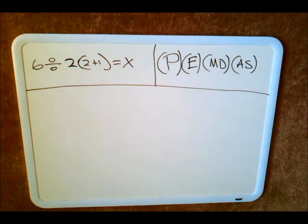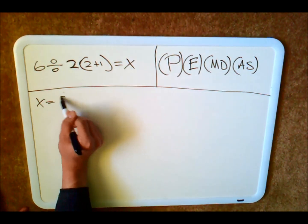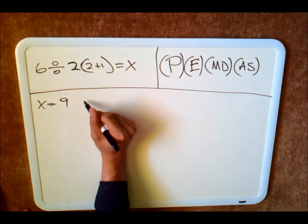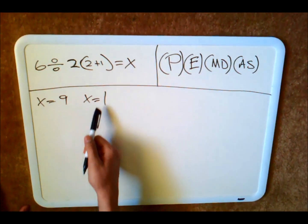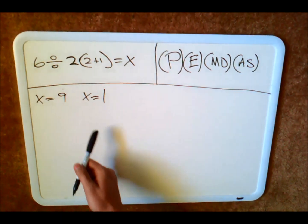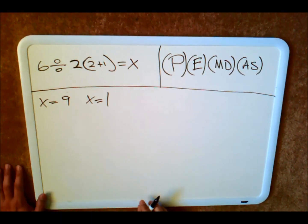Okay, really quick. I've already shown how x is equal to 9. But of course, if you tell someone this, as is obvious by Facebook, they're going to argue with you and say x is 1. So I want to show real quick how people are getting the 1, and I want to go ahead and show you how you can tell them they're doing it incorrectly and hopefully end any arguments.